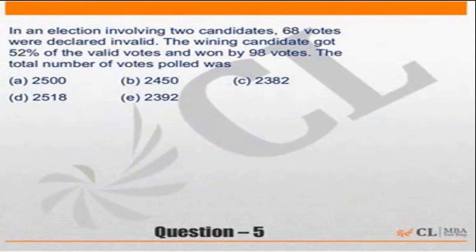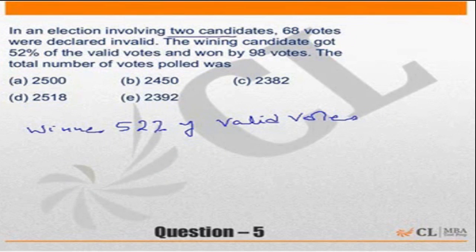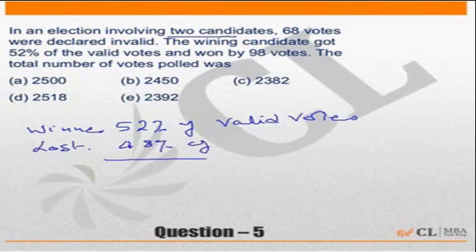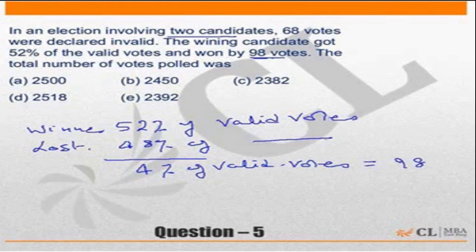Abhay is asking how did we get 4 percent. The winning candidate got 52 percent of valid votes. Since there are only two candidates, the person who lost would have got the remaining 48 percent of valid votes. So the difference between the two is 4 percent of valid votes. Since the winning candidate got 98 more votes, 4 percent of valid votes is equal to 98.